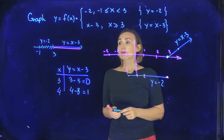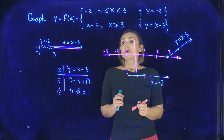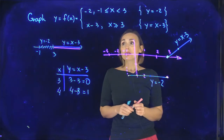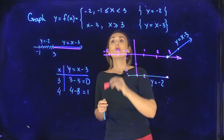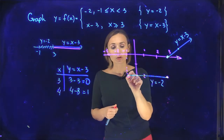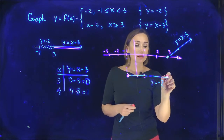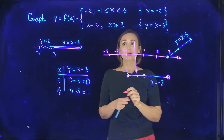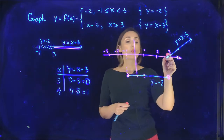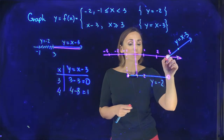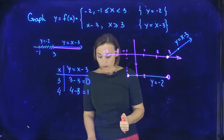Now we need to figure out what point is excluded and what point is included. You need to start from the intervals. For y equals negative 2, x is greater than or equal to negative 1, so that point is shaded, and less than 3, meaning that point must be excluded. For y equals x minus 3, x is greater than or equal to 3, so that point is included. That's how to graph this piecewise defined function.